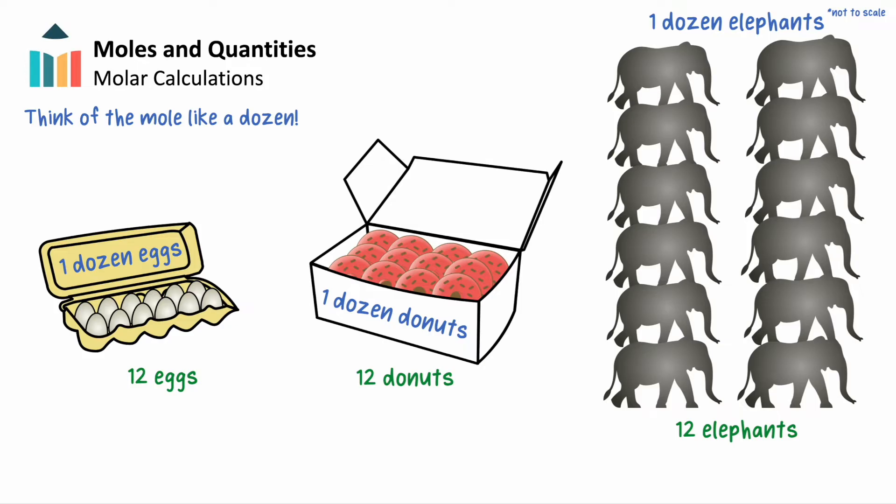Nevertheless, we would never think that the mass of 12 eggs, donuts, and elephants would be the same. We could apply this logic to the concept of a mole.